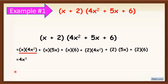We know that there is 1 in x. So, 1 times 4 is equal to 4. Then copy the base, which is x, and add the exponents: 1 plus 2 is equal to 3. That's why we have 4x cubed here.